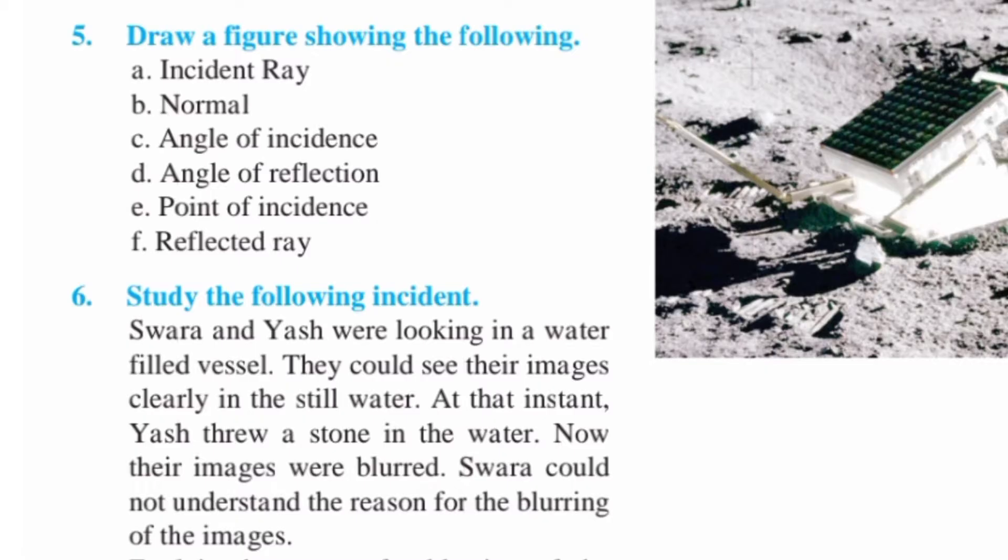Question five: draw a figure showing the following — a) incident ray, b) normal, c) angle of incidence, d) angle of reflection, e) point of incidence, f) reflected ray.